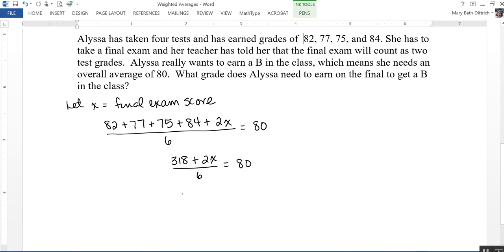And multiplying both sides by 6, 318 plus 2x equals 480. And then I'll subtract 318 from both sides. So 2x equals 162.